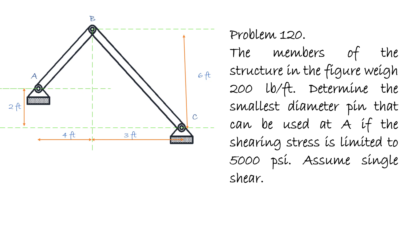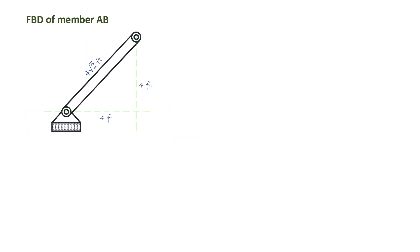We have two members: member AB and member BC — the members connecting from A to B and B to C. We also have the dimensions. Consider the FBD of member AB. I have resolved the dimensions and also the length of this member with the use of the Pythagorean theorem.